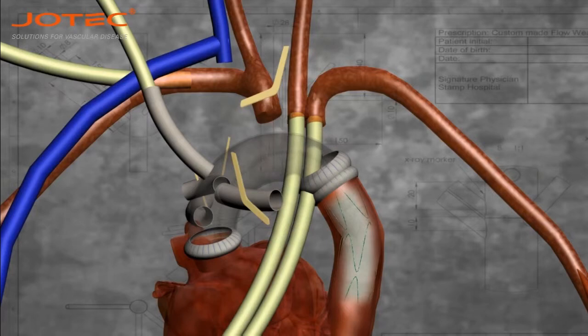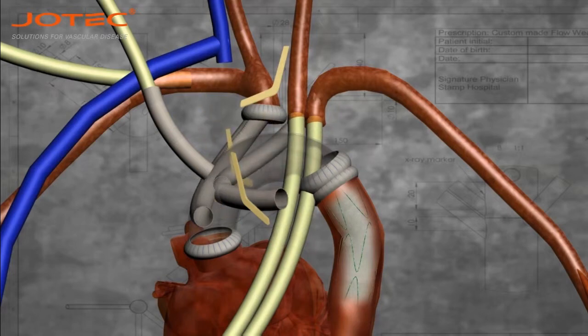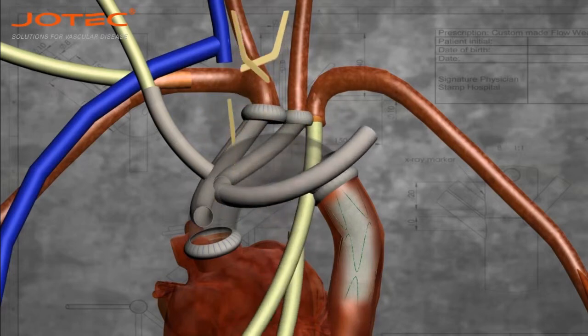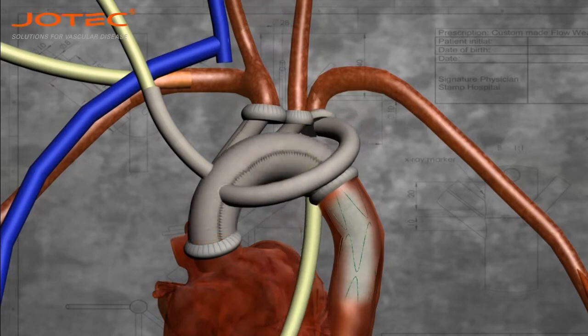Restart of systemic perfusion. The selective antegrade cerebral perfusion is still running through the cannulas. Exclusion of the anastomosis for the innominate trunk, common left carotid artery, and left subclavian artery. Removal of the cannula.